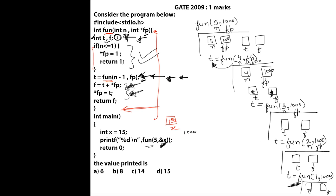When fun(1, 1000) is called, the if-condition is satisfied since n equals 1. We execute *fp = 1, storing the value 1 at location 1000. Then we return 1. This returned value 1 is stored in t of the calling function.